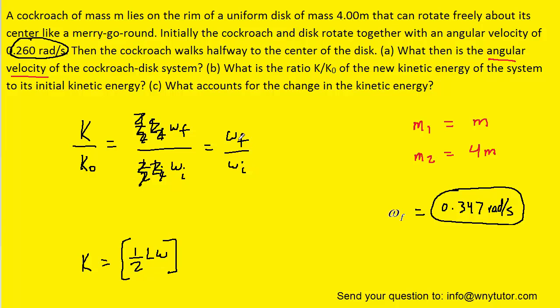Therefore, the kinetic energy ratio simply becomes the ratio of the final angular velocity to the initial angular velocity. We can plug in those known values and we get 1.33. So, that would be the correct answer to Part B.